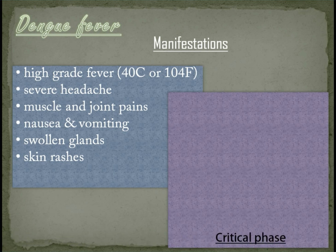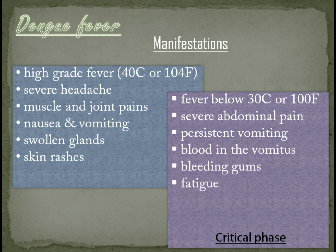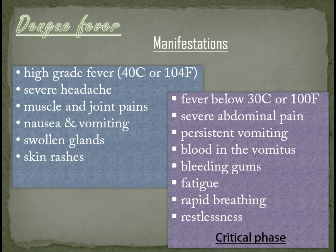For severe dengue, the patient enters the critical phase normally about 3 to 7 days after the onset of illness. The fever will start to drop below 38 degrees Celsius. Other manifestations are severe abdominal pain, persistent vomiting, presence of blood in the vomitus, bleeding gums, fatigue, rapid breathing, and restlessness. If a patient manifests these symptoms during the critical phase, close observation for the next 24 to 48 hours is vital so that proper medical care can be provided to avoid complications and death.